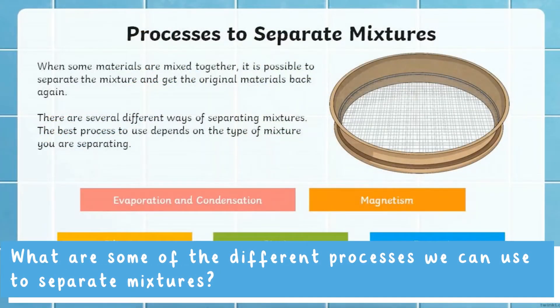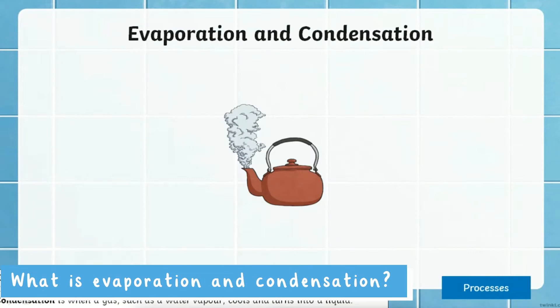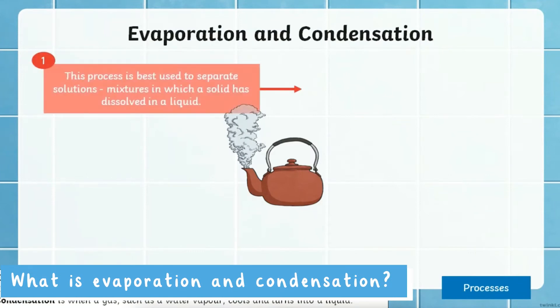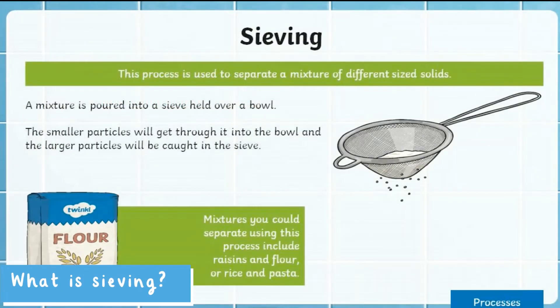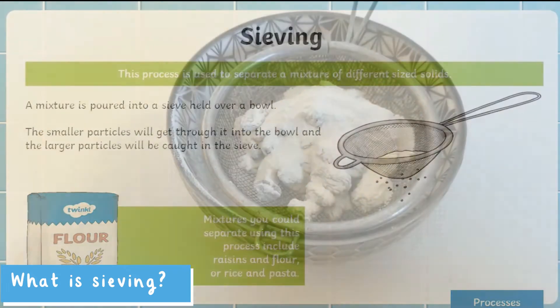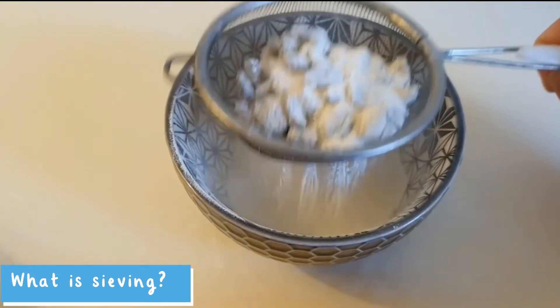There are several different ways of separating mixtures. The best process to use depends on the type of mixture you are separating. This process is best used to separate solutions — mixtures in which a solid has dissolved in a liquid. Examples include raisins and flour, or rice and pasta. Let's take a look at how sieving is used to separate these; the raisins get caught in the sieve.